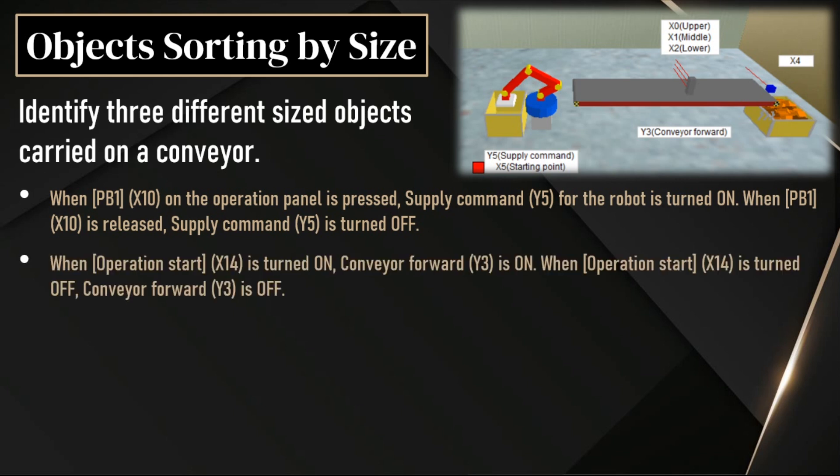When the start button is turned on, the conveyor will move in the forward direction. If the start button is turned off, then the conveyor will be off.